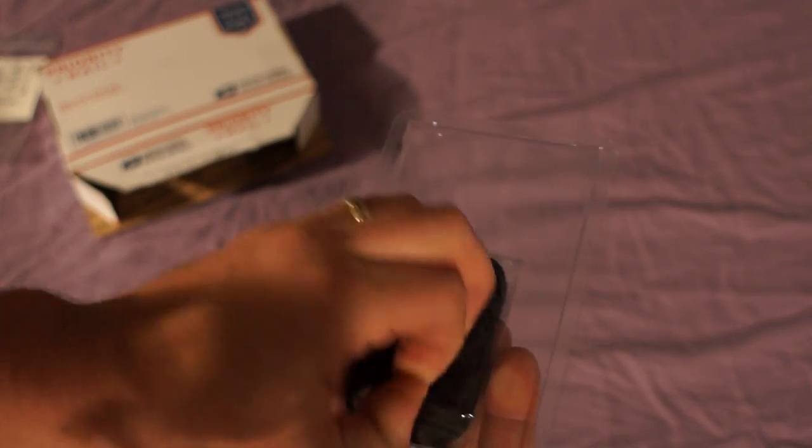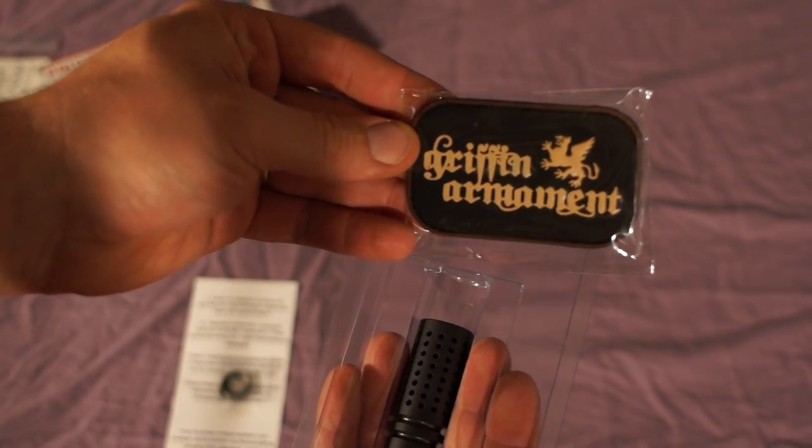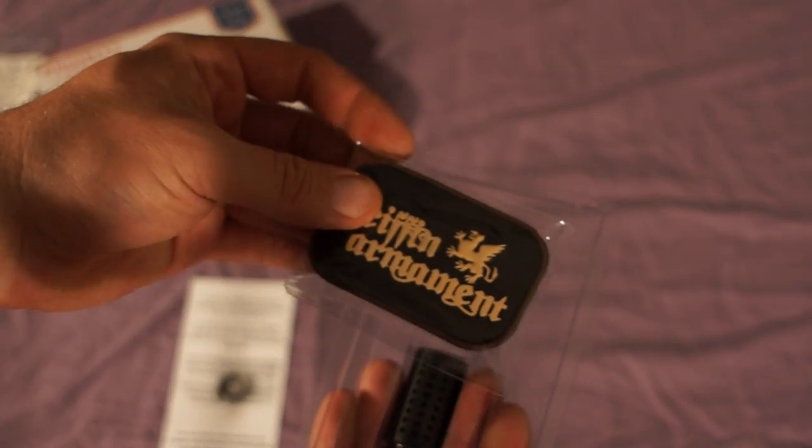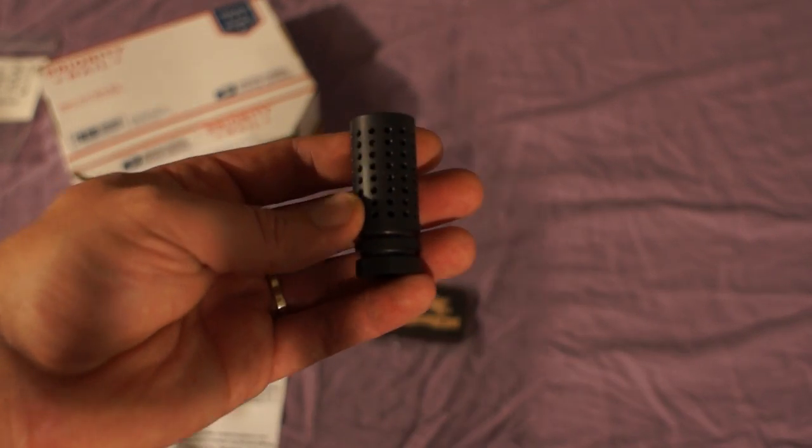Also comes with a nice Griffin Armament patch. You can put that on a hat or a range bag or anywhere else that's velcro. So that's nice to get. But what we really care about is the tactical compensator itself.